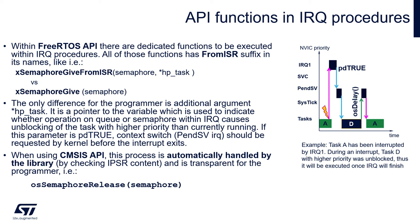We then execute the code of Task D, which has higher priority than Task A. At the end of this execution, within the task code there is a function OS delay. OS delay means that Task D is deciding to go into a blocked state for a certain time. This again causes the next call of PendSV interrupt because Task D is no longer in a ready state — it is in a blocked state. So we can return to the previously preempted Task A. PendSV performs the context switch from Task D back to Task A, and Task A can be executed again.